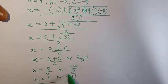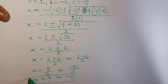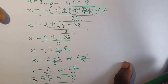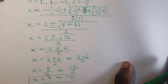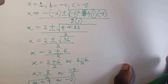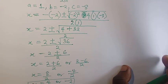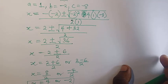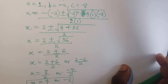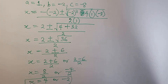So x is 4 or minus 2. That is our final answer when x squared minus 2x minus 8 equals to 0 is solved using the formula method. I hope you enjoyed the lesson — please subscribe if you haven't, and see you in the next video.